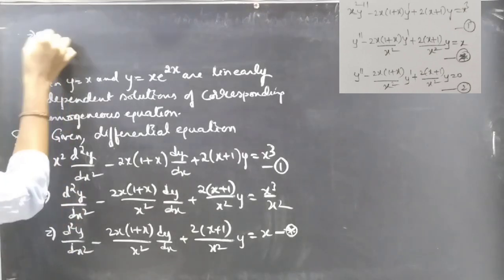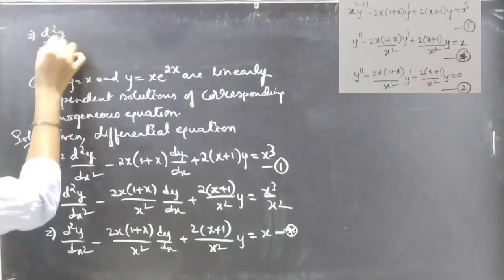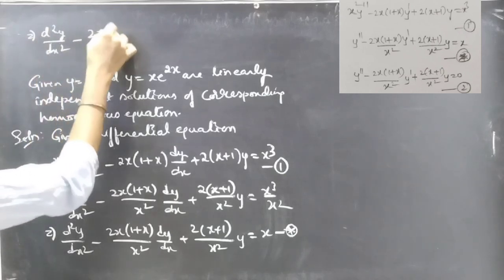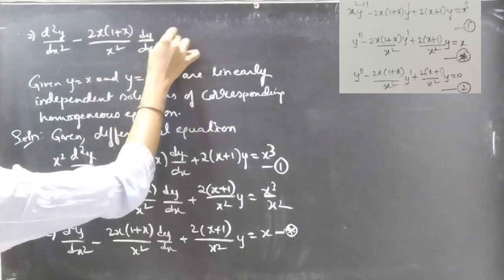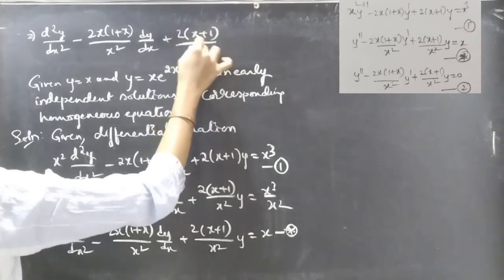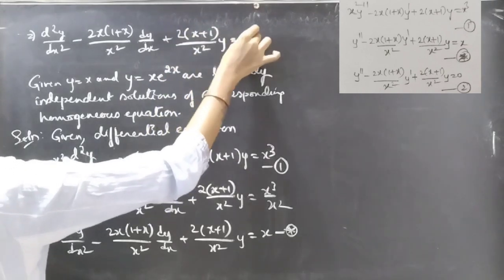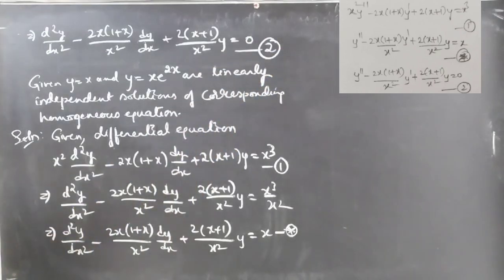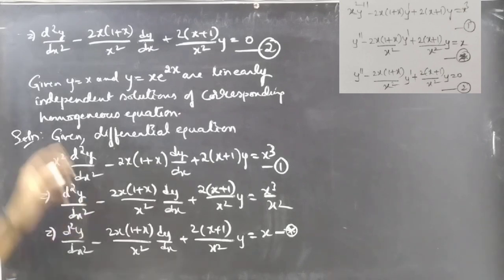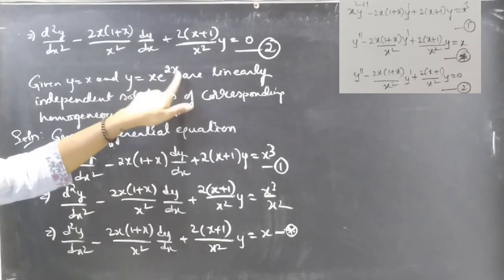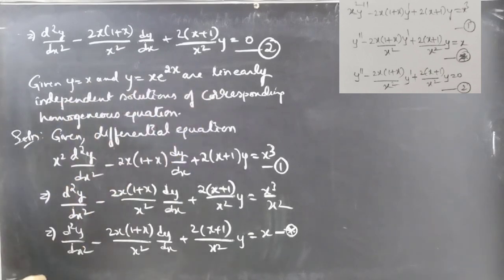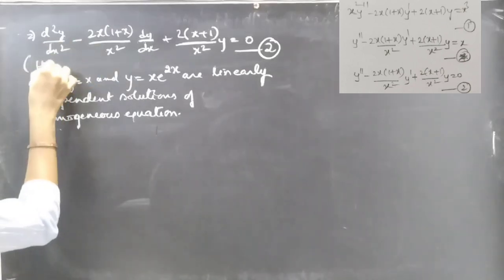Now let's write the corresponding homogeneous equation, which is d²y/dx² minus 2x(1+x)/x² times dy/dx plus 2(x+1)/x² times y equals 0. Consider this as equation 2. We are given that y₁ = x and y₂ = x·e^(2x) are linearly independent solutions of this homogeneous equation.